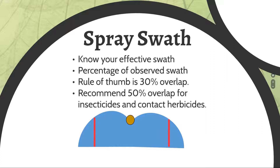For an insecticide application, we've got to take it a step further. We generally recommend more like 50% overlap — basically hitting every part of that field twice. If we're not making that transition with boomless sprayers, you're going to see streaks in your field of efficacy. You may be seeing some of that in your herbicides as well.